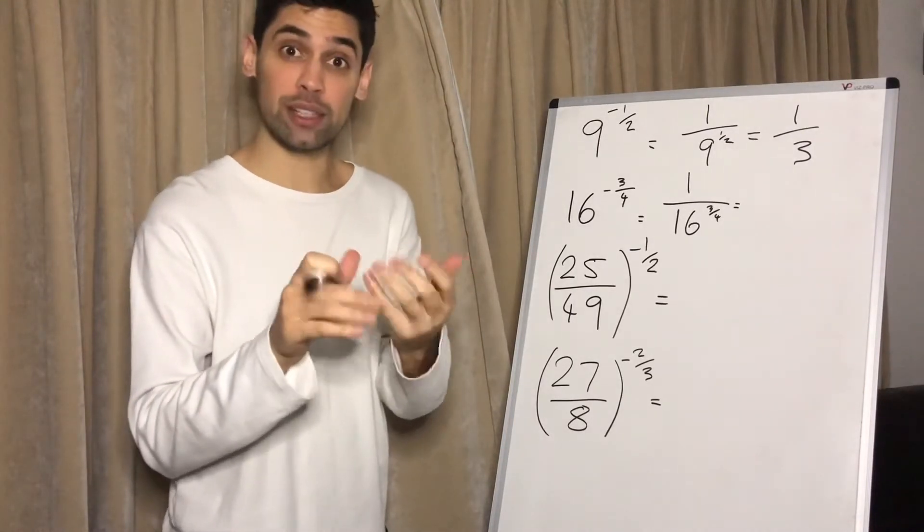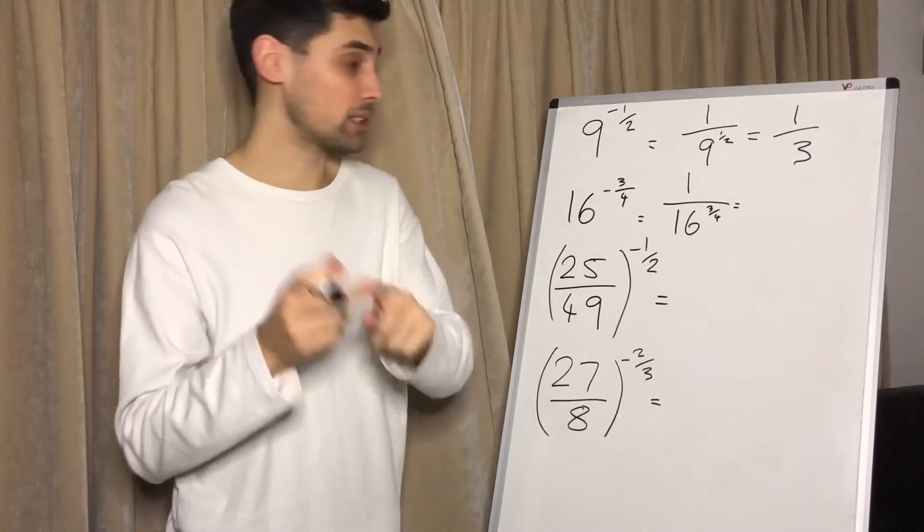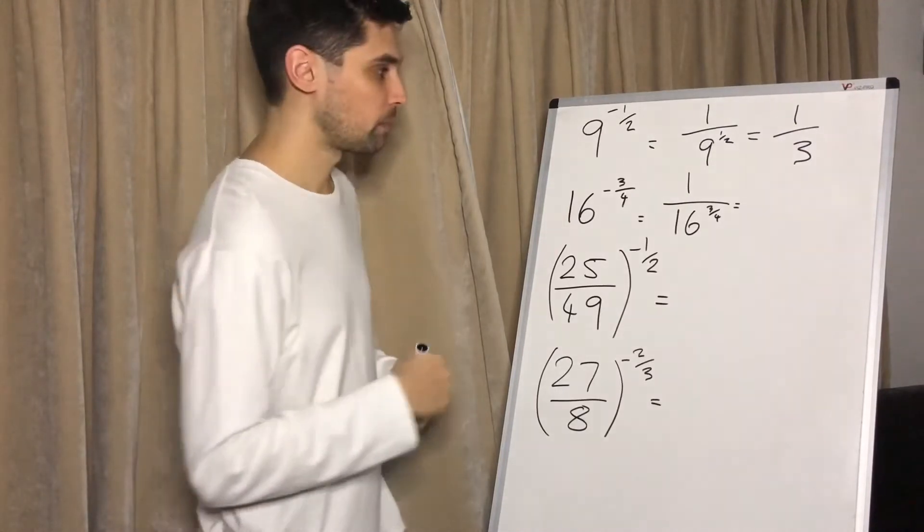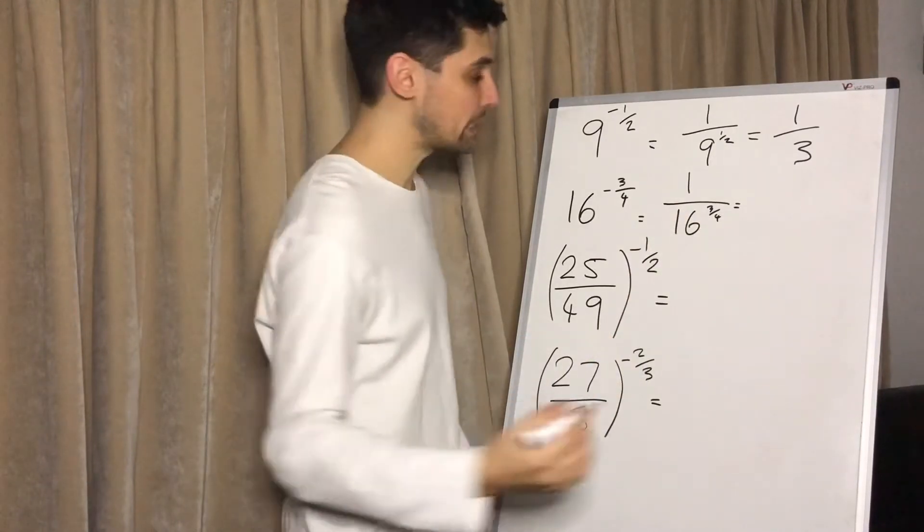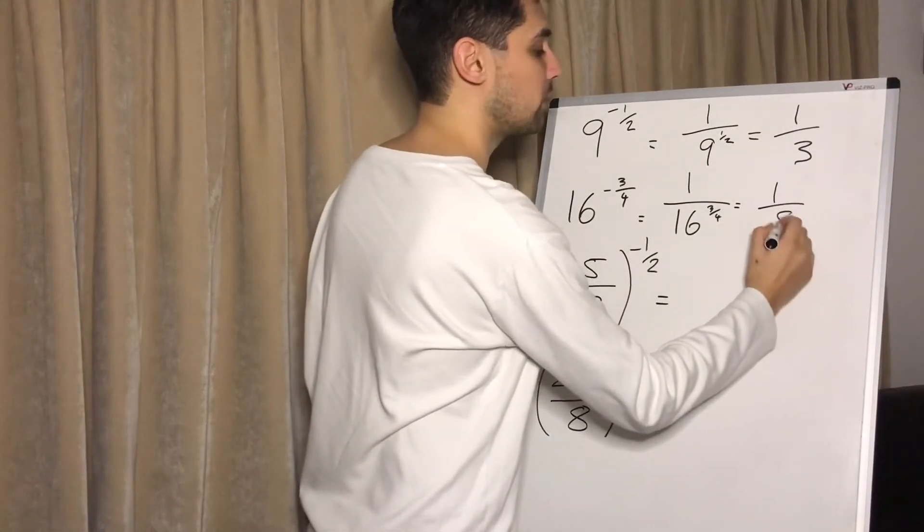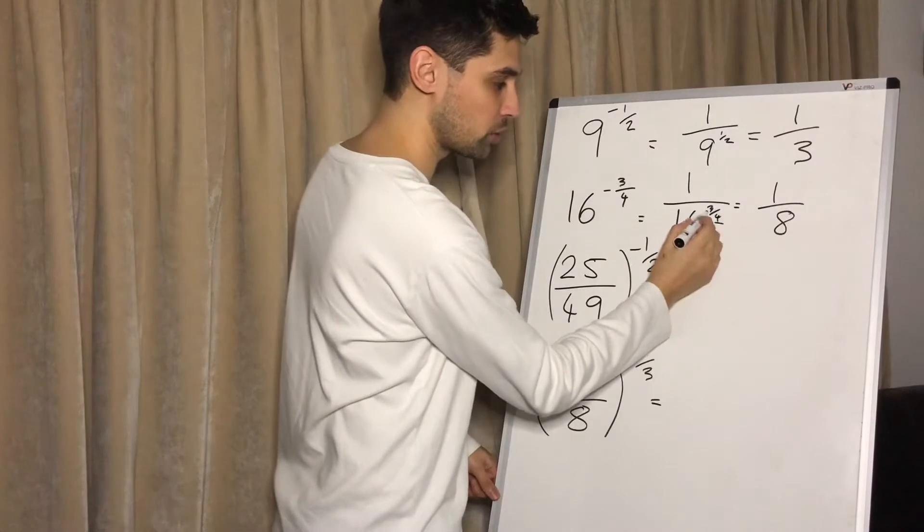Two, four, eight, 16, 32, 64, 128, 256. It goes on. You need to know these. The fourth root of 16 is two. Two cubed is eight. So it's going to be one over eight. Remember, fourth root cubed.